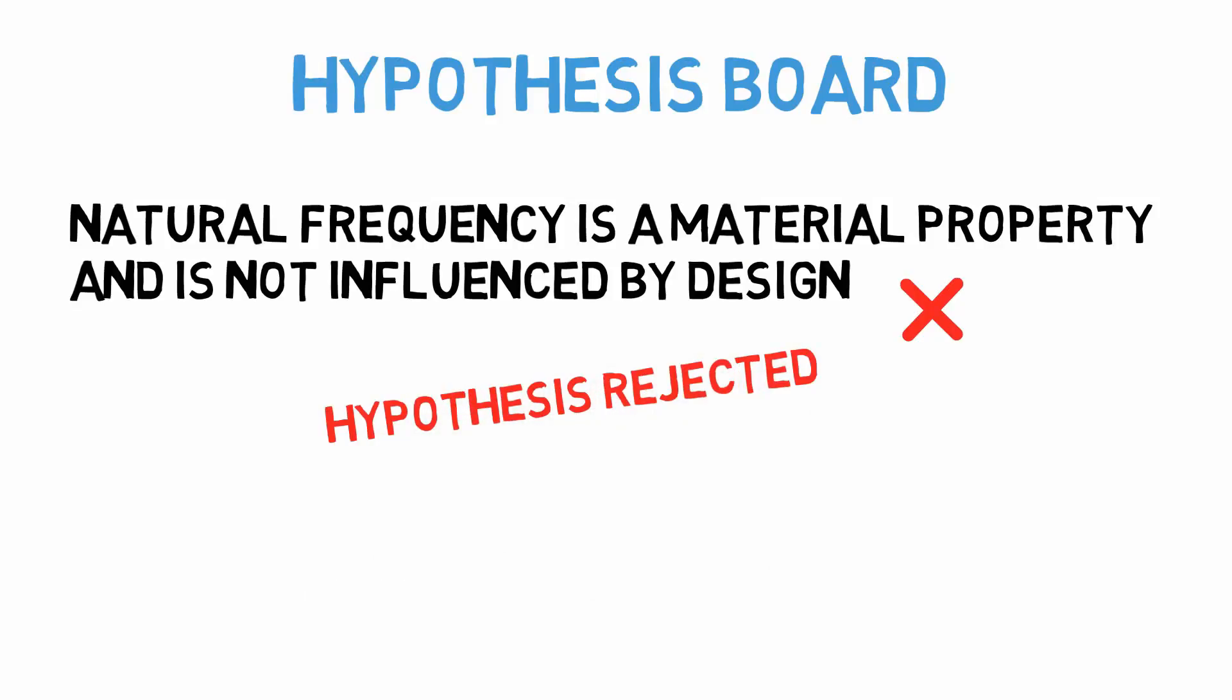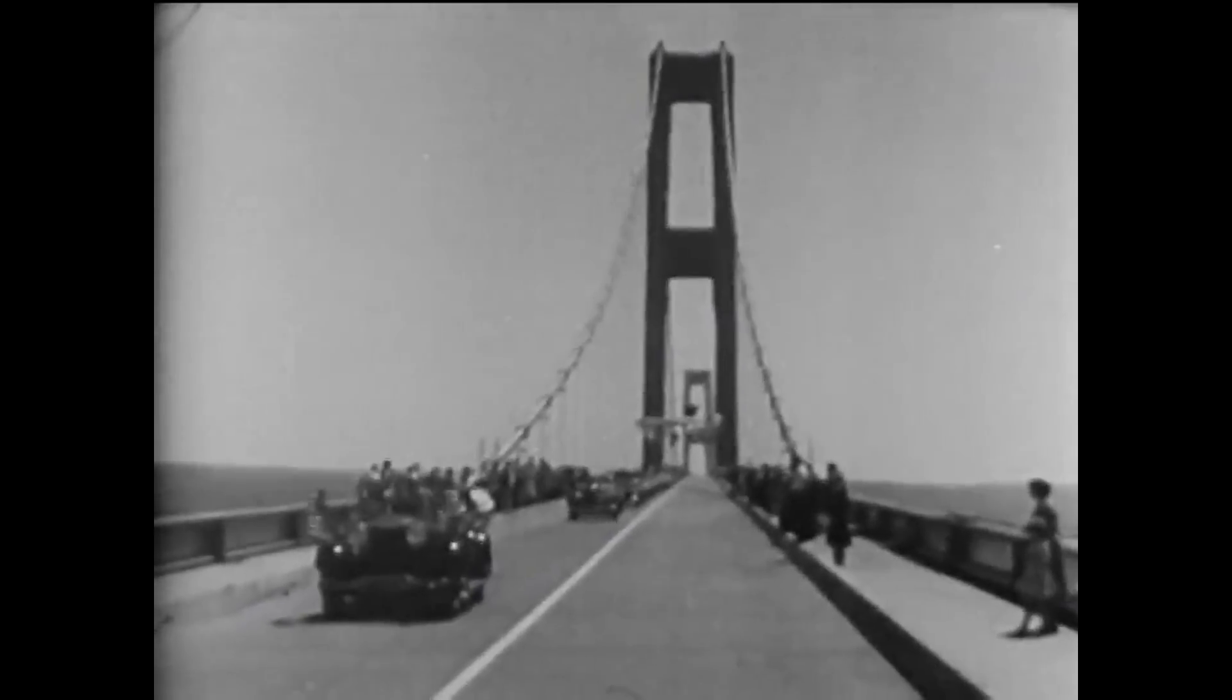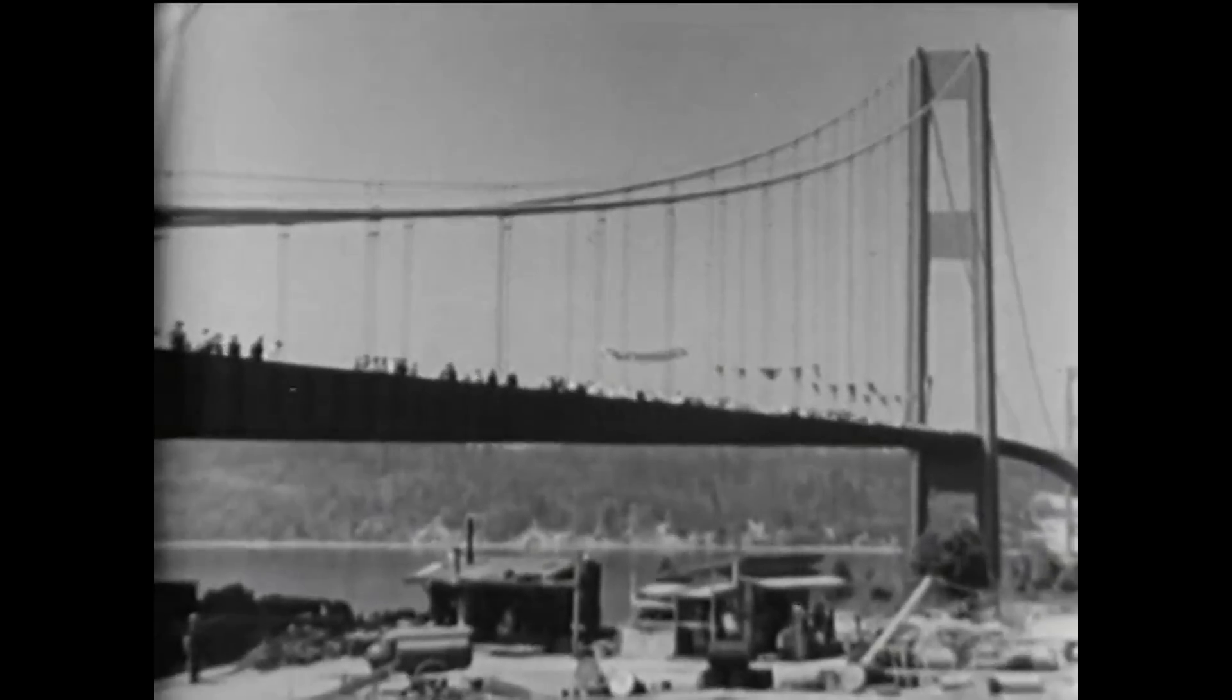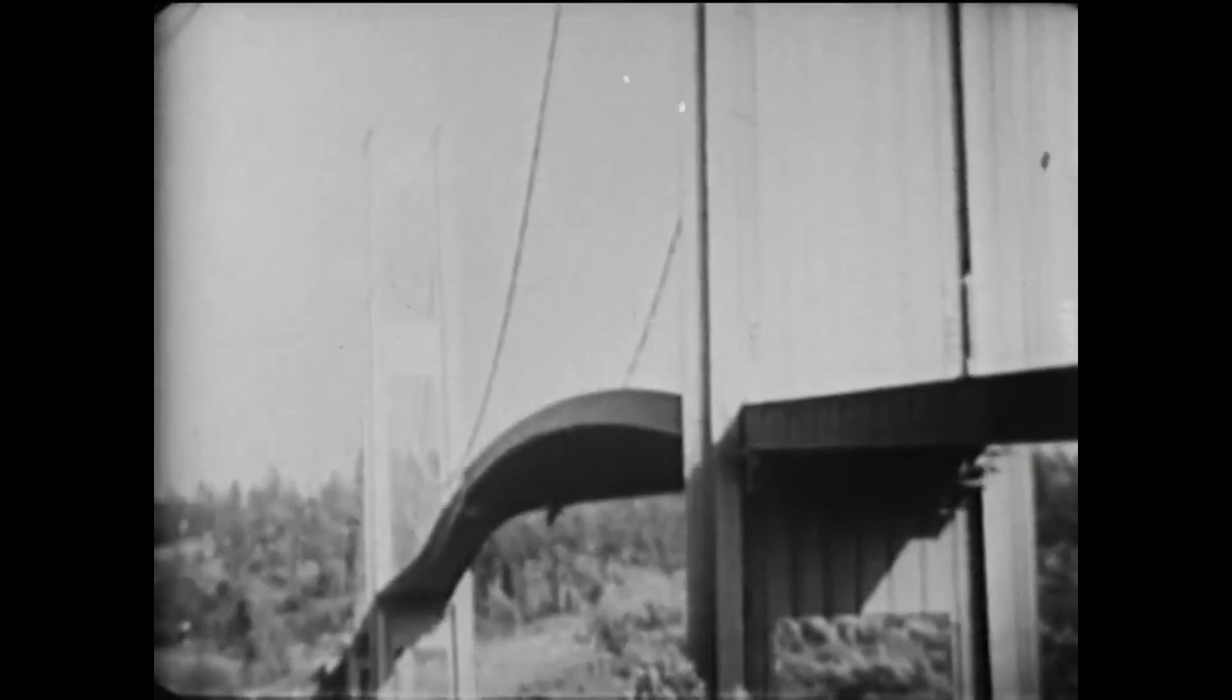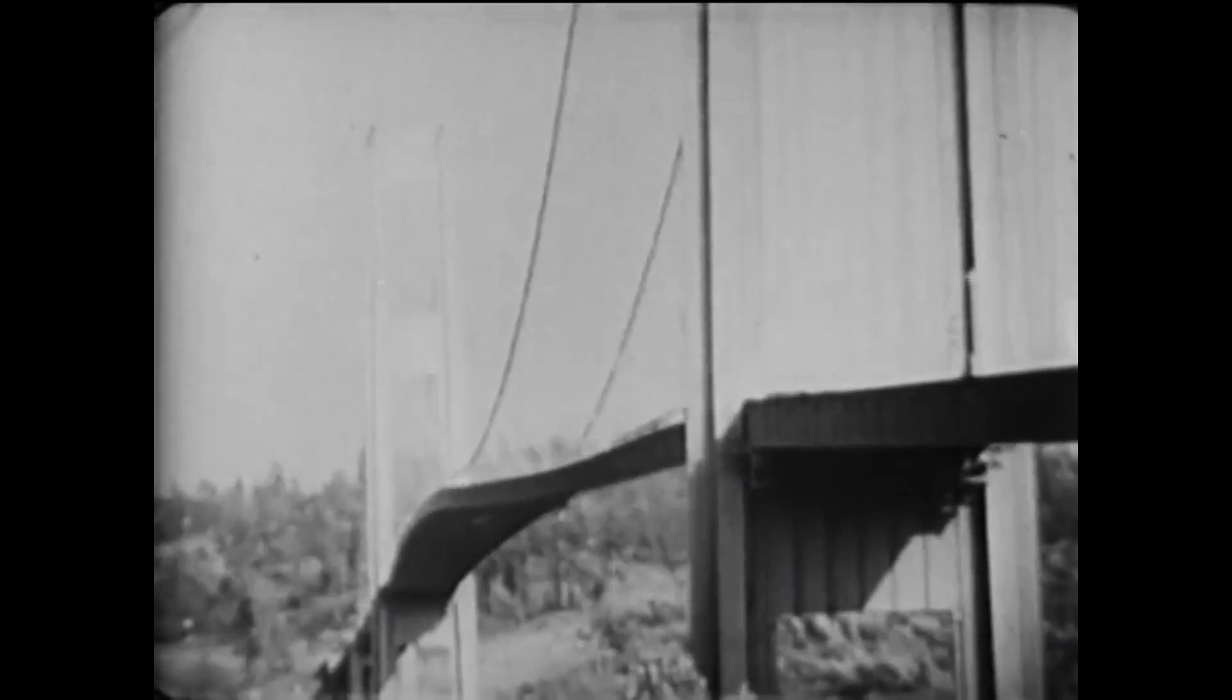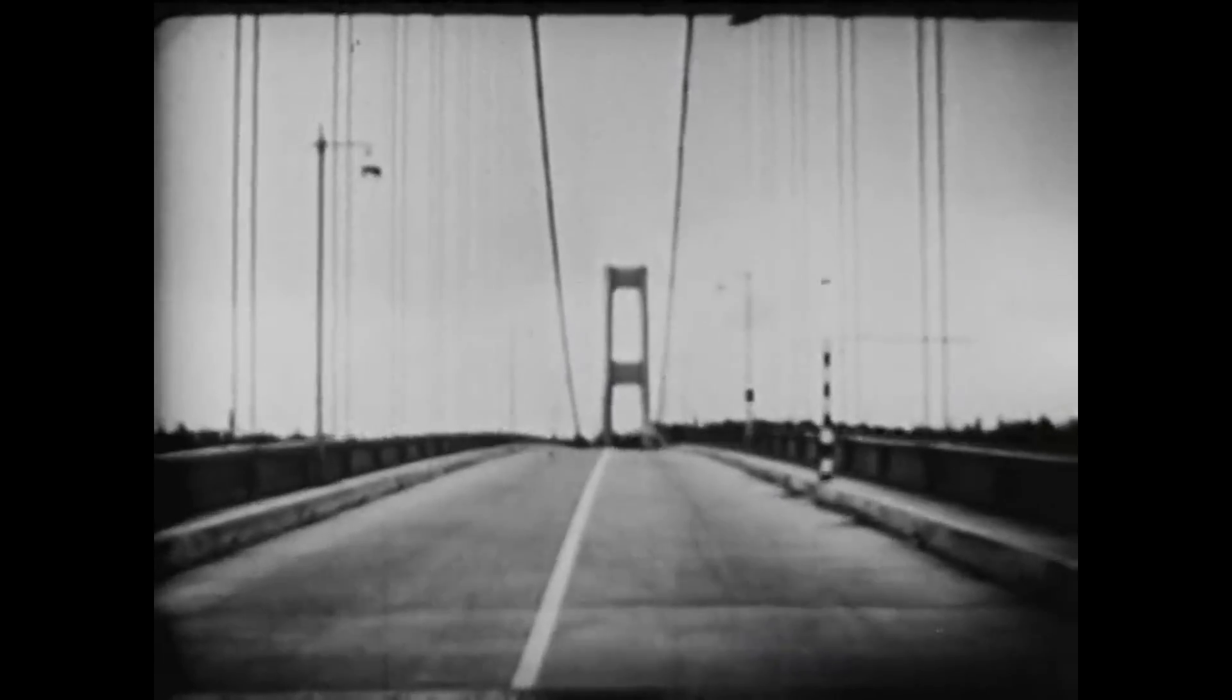But what does this mean in the greater engineering sense? If we go back to the Tacoma Narrows Bridge, this conclusion makes sense, because the bridge wasn't constructed out of different materials than other bridges at the time. The key difference was how the bridge was built and what design decisions were made. Mass, material stiffness, and geometry all play a significant role in structural resonance.